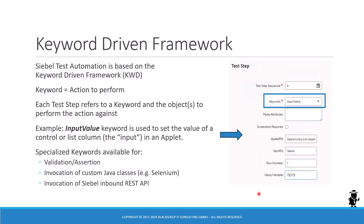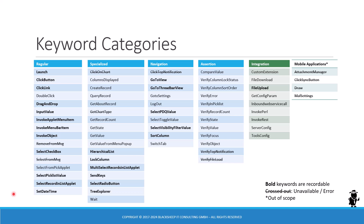There is a lot of emphasis on the keyword driven framework so we're really able to understand each and every relevant keyword for modern Siebel test automation — not just those used during a recording, but those that you can add manually such as steps for validation, assertion, or invocation of custom Java classes to run your own Selenium code, or invocation of the Siebel inbound REST API. The course covers an impressive array of keywords that are all documented and explained with details and demonstrations.